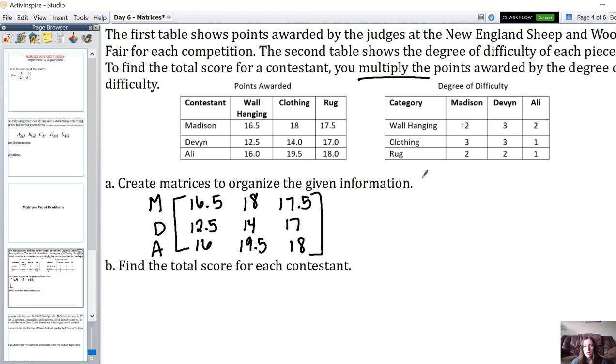Then our second matrix, before each person had their own row, now each person has their own column and we're going to keep it that exact same way. So for Madison, the degrees of difficulty were 2, 3, and 2. For Devon, they were 3, 3, and 2. And for Allie, 2, 1, and 1. Those are our matrices.